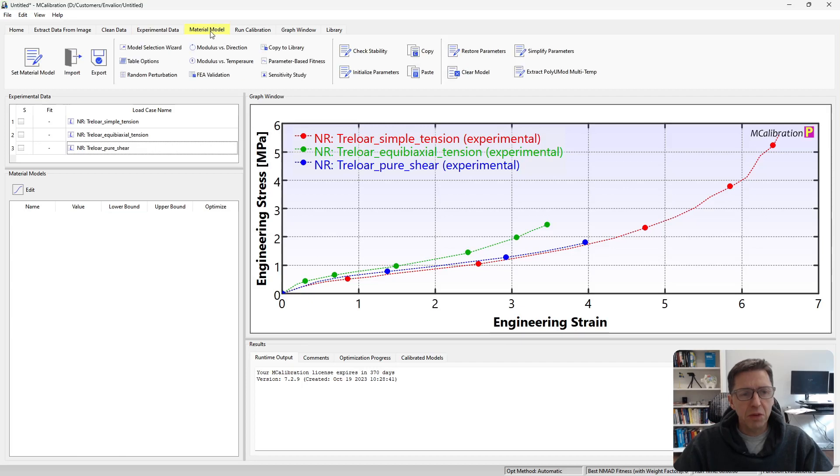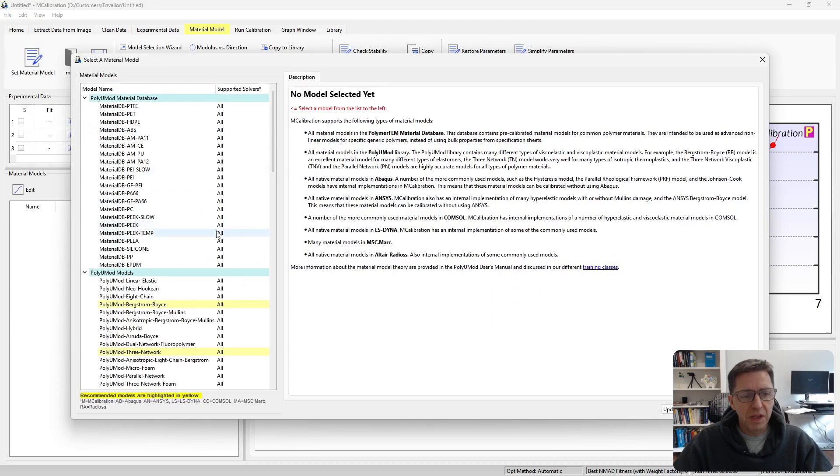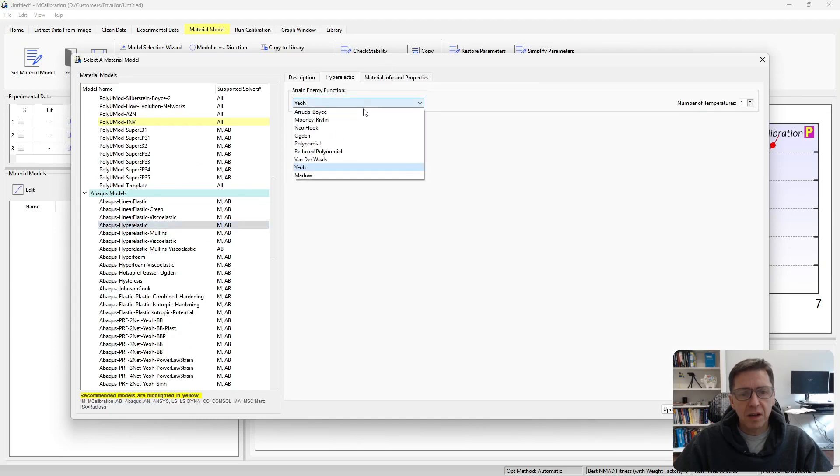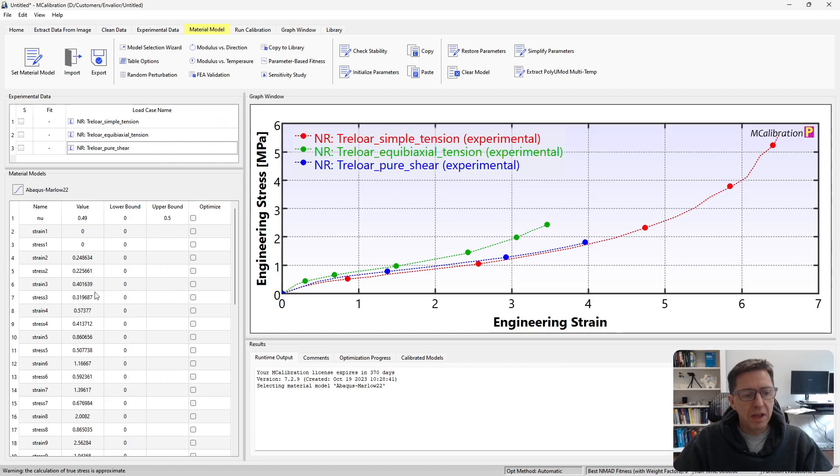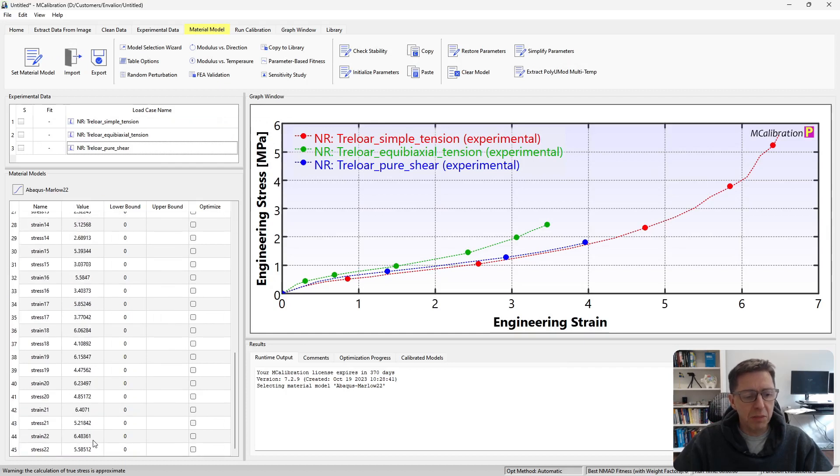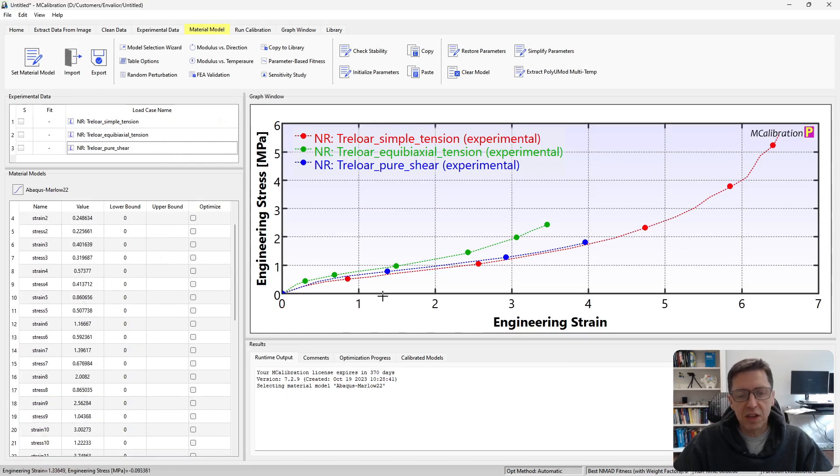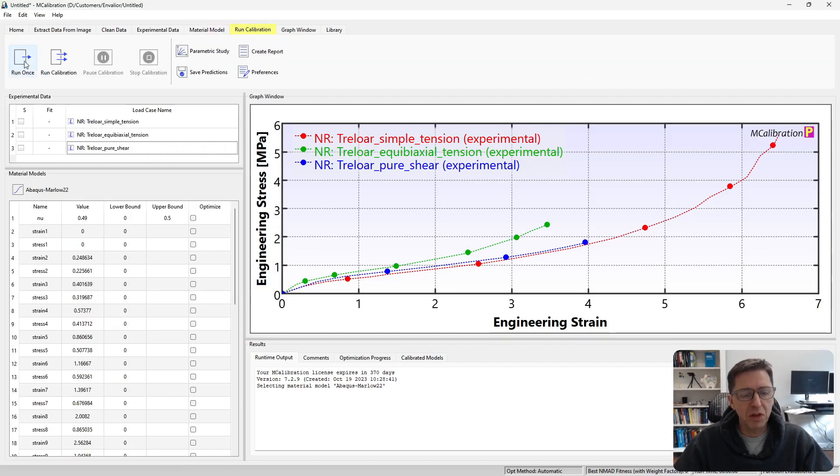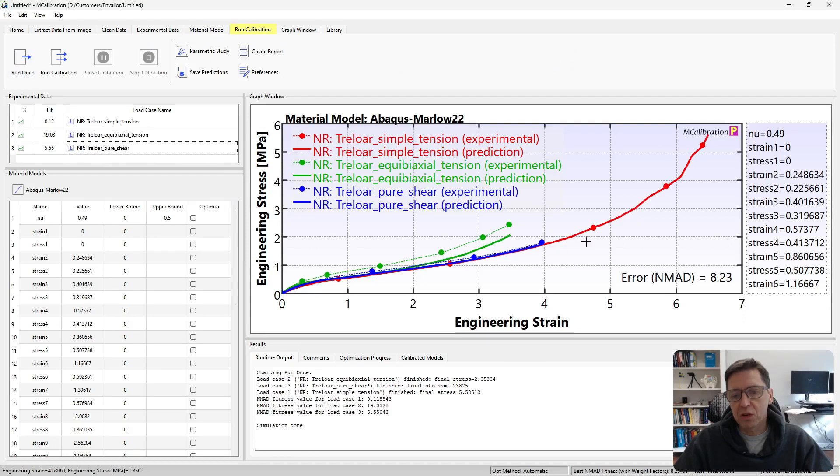I'm going to go to material model, set material model. I'll start with the Abacus Marlow model. Let's select Marlow and say OK. MCalibration picks these numbers now based on the data directly. You can search for them, but that doesn't make any sense, because the software only found the best set from the data. If I click run once, we see in the solid lines here are the predictions.